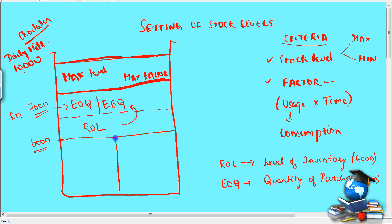Now on the bottom portion again there is a minimum level. If you have maximum you should have minimum, and then you have a minimum factor, okay. Suppose the minimum level is three thousand. Again, minimum factor will be the minimum usage into minimum consumption.